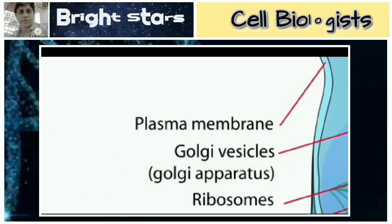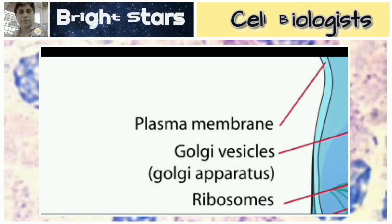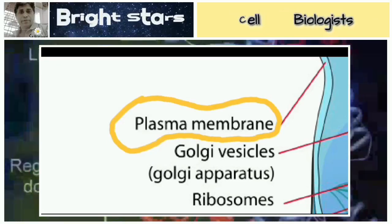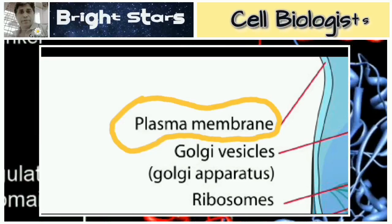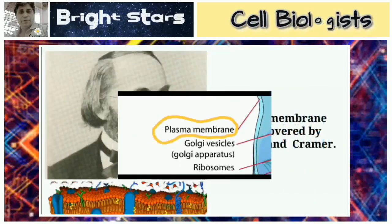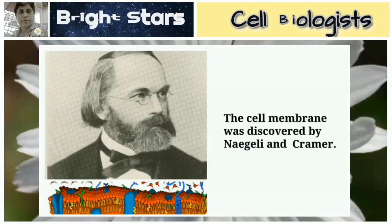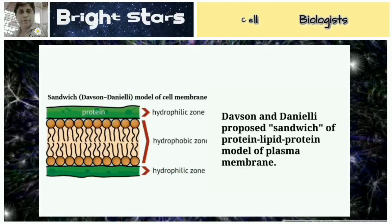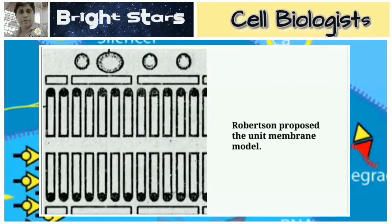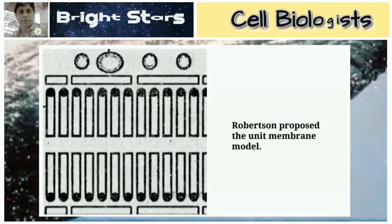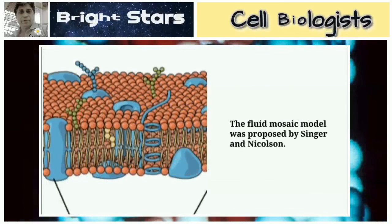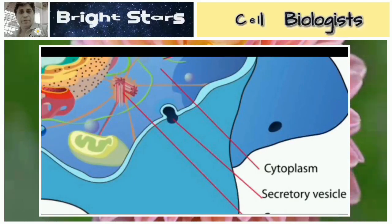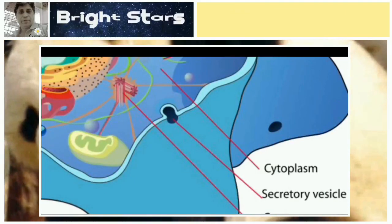The outermost layer of the cell is the plasma membrane. It was discovered by Nageli and Kramer. Danielli proposed the sandwich protein-lipid-protein model of the plasma membrane. Robertson proposed the unit membrane model for plasma membrane. The fluid mosaic model was proposed by Singer and Nicholson.